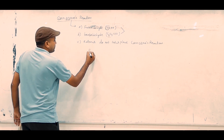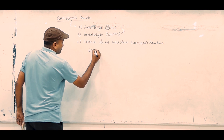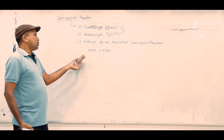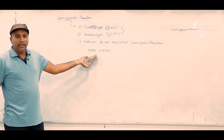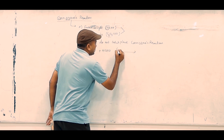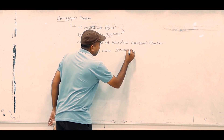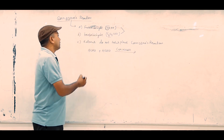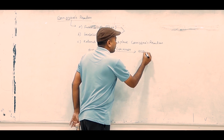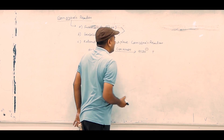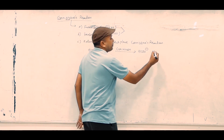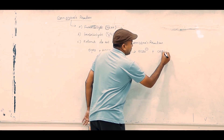For example, take two molecules of formaldehyde (HCHO). These two aldehydes do not have alpha hydrogens. In the presence of concentrated alkali, one is converted to get a carboxylate ion and the other one is converted to get an alcohol.